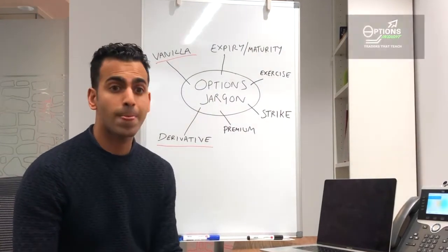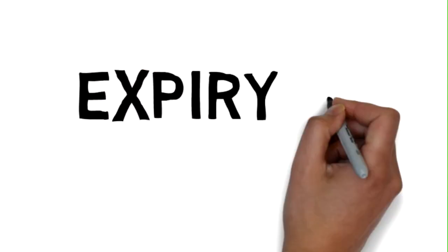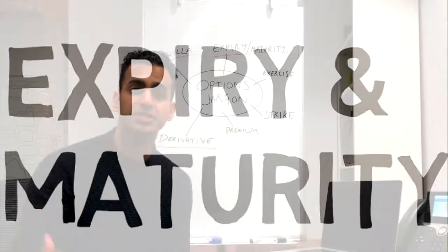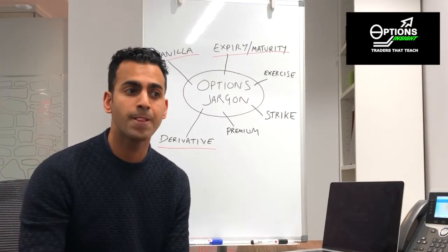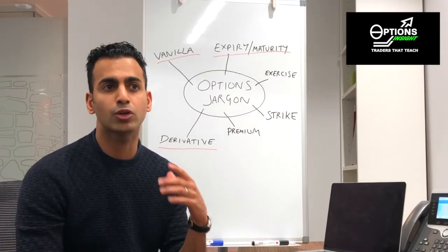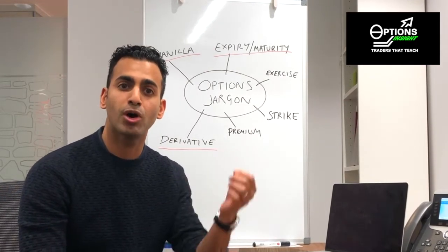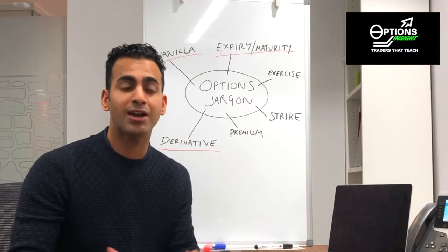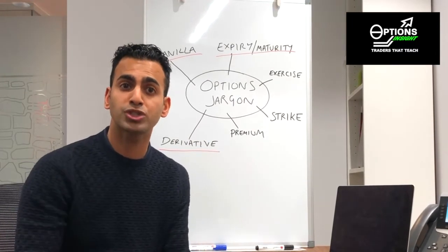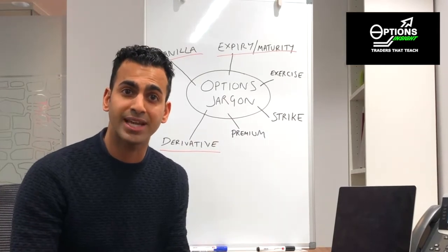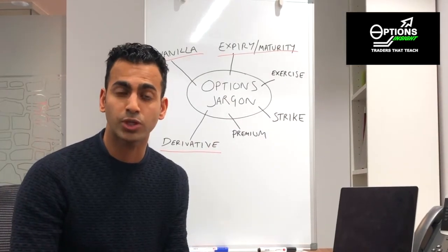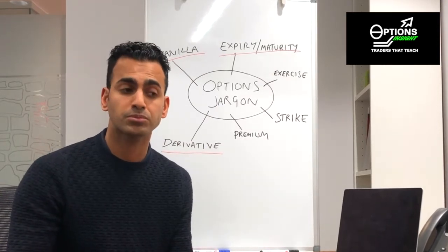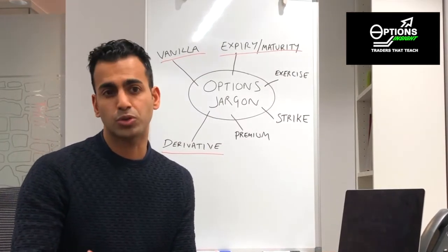The next term is expiry and maturity. When we talk about an option's expiry or an option's maturity, it's because calls and puts are the right to buy or sell an underlying asset. But that right — you don't have it forever. When you buy an option, it has to have an expiry date, or maturity date as we call it. After that date, you will no longer have the option.